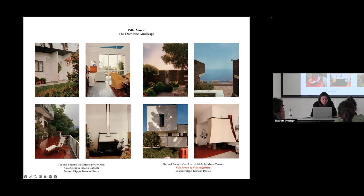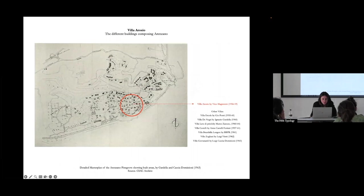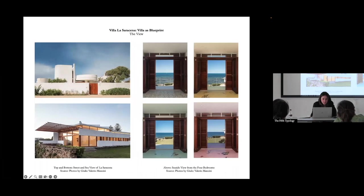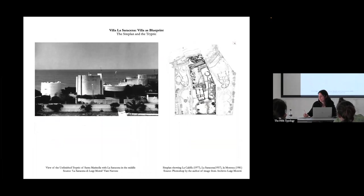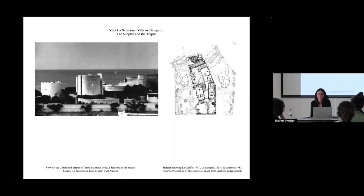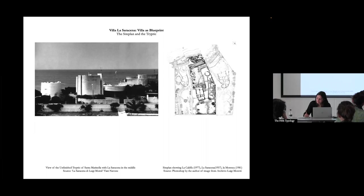There was one plan where you showed three villas on the sea — all designed by the same architect, Moretti, who was also designing the Watergate. One interesting question: at some point in the history of the villa, does the villa become a caricature that more explicitly exposes the villa's historical program? There are some moments in here where you're suggesting that, and it would be nice to draw that out even more.